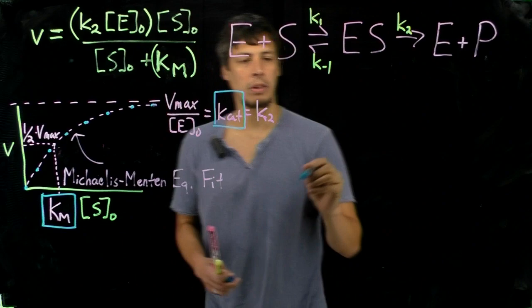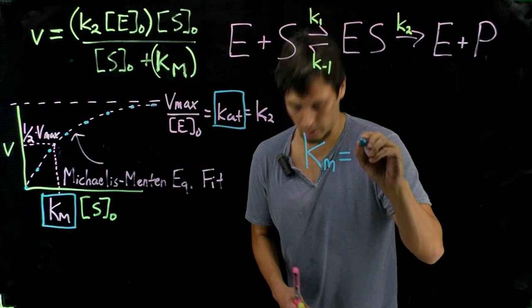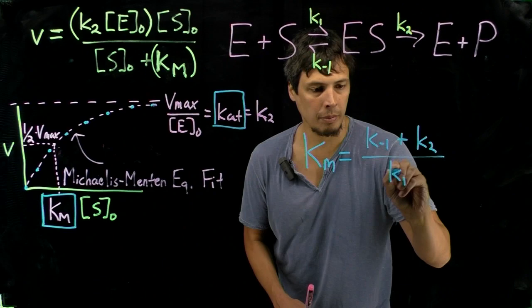Km, however, is a little bit more tricky, because remember, Km ties in several rate constants that are involved here. And so this is equal to K-1 plus K2 all over K1.